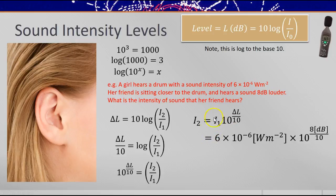So you'd say the original intensity multiplied by 10 to the power of 8 over 10, which comes out to be 3.79 × 10⁻⁵ watts per meter squared.